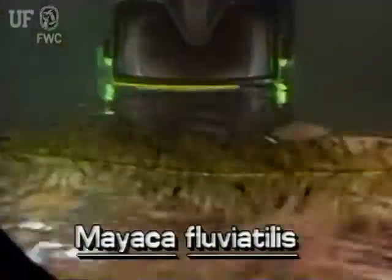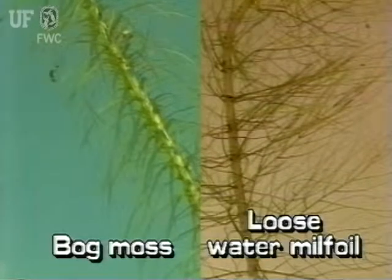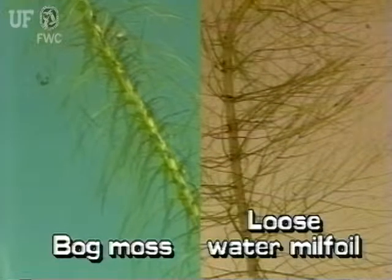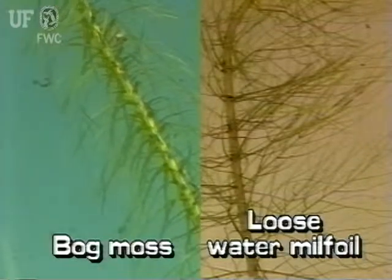Because of its general shape and ecological niche, bogmoss sometimes may be confused for other plants such as loose milfoil, Myriophyllum laxum. Don't worry, bogmoss can always be distinguished by its short, soft, thread-like leaves that are not divided. Loose milfoil leaves, on the other hand, may be fine and thread-like, but the leaves are divided.